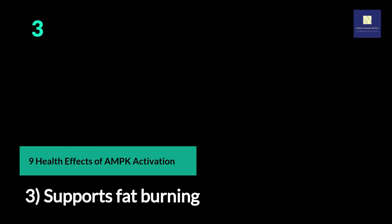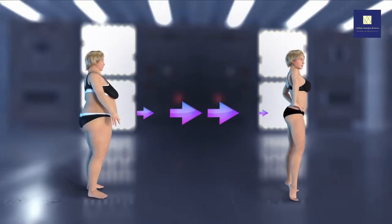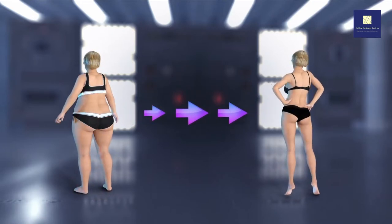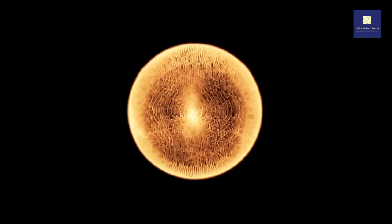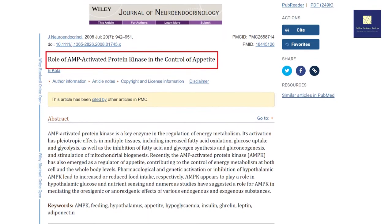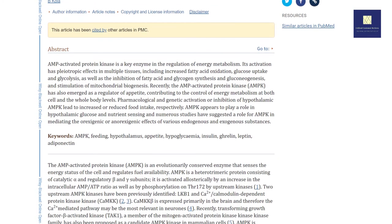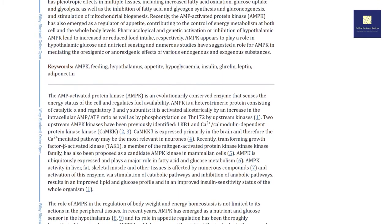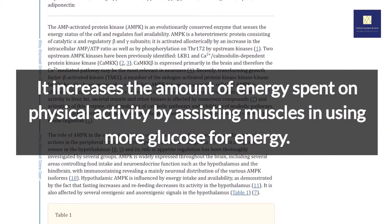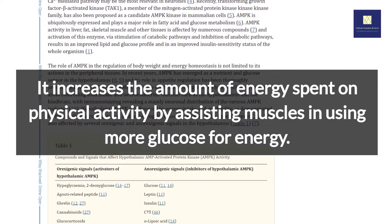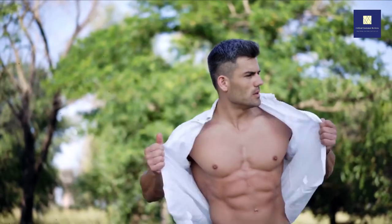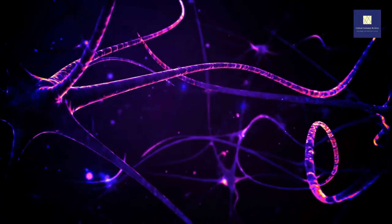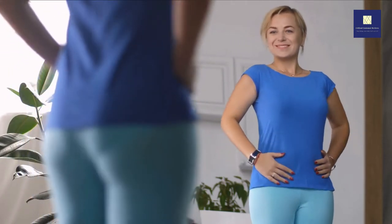3. Supports Fat Burning. AMPK outside of the brain increases fat burning, and this pathway can result in weight loss. AMPK can alter hunger and satiety, as well as how cells use and store energy. Under certain conditions, AMPK may help stimulate fat burning and weight loss. It increases the amount of energy spent on physical activity by assisting muscles in using more glucose for energy. Homeostasis, which is influenced in part by AMPK activation, can result in increased body temperature, decreased inflammation, and improved hormone balance — all contributing to your ability to maintain a healthy weight.